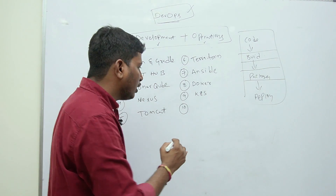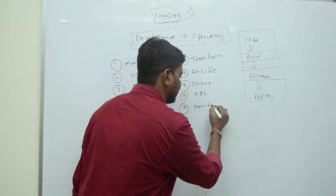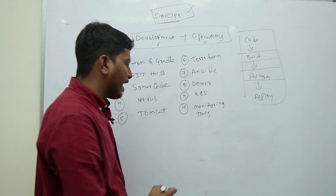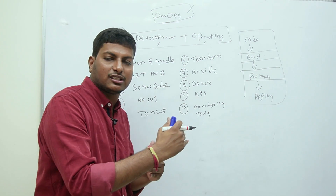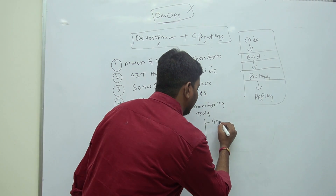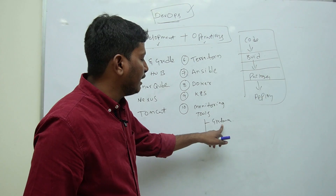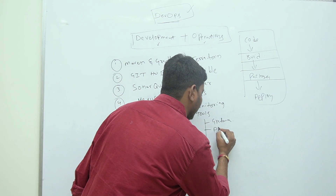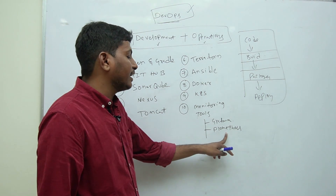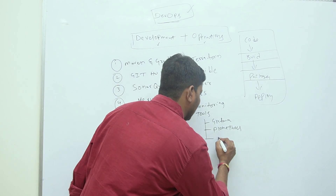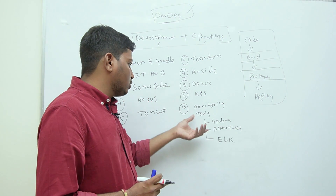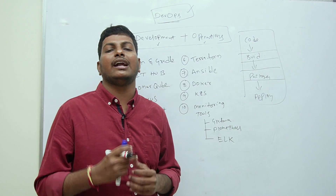We also need knowledge of monitoring tools. As a DevOps engineer, we need to monitor our infrastructure and applications — how clusters are running, how servers are running, how applications are running. Grafana is one tool for monitoring our Kubernetes cluster. Prometheus is used to monitor and get alerts from our application. We also use the ELK stack for application log monitoring.